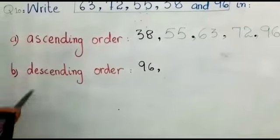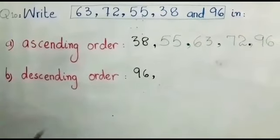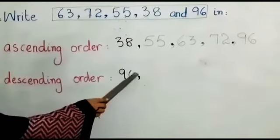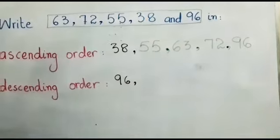Descending means greater to smaller. So we have to write greater number first. 96 is the greatest number. So we write here 96.